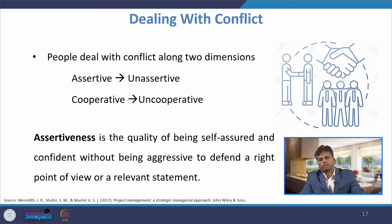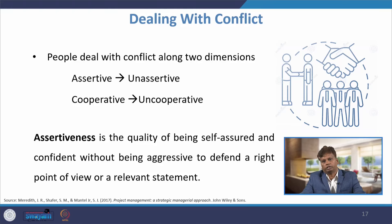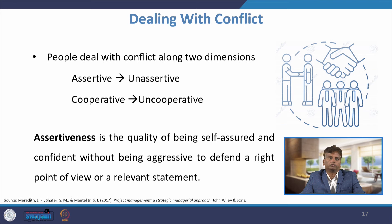So far we have discussed the sources of conflict at different stages of the project life cycle. Now I am going to discuss how to deal with conflict. People deal with conflict along two dimensions: one is assertiveness, and the second is cooperativeness. A person may be assertive or unassertive on one scale, and cooperative or uncooperative on another. Using these two scales, we are going to suggest some conflict resolution techniques.